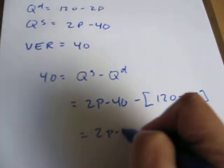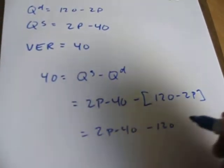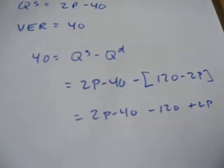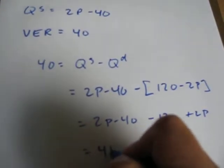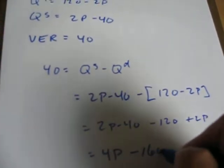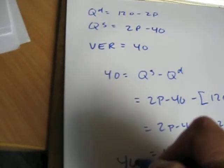So, 2p minus 40 minus 120 plus 2p. Collect your terms. 4 times the price minus 160 is equal to the VER of 40.